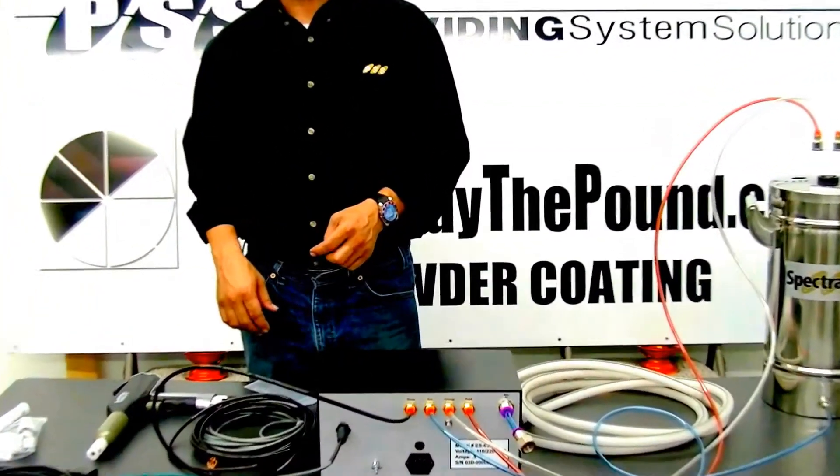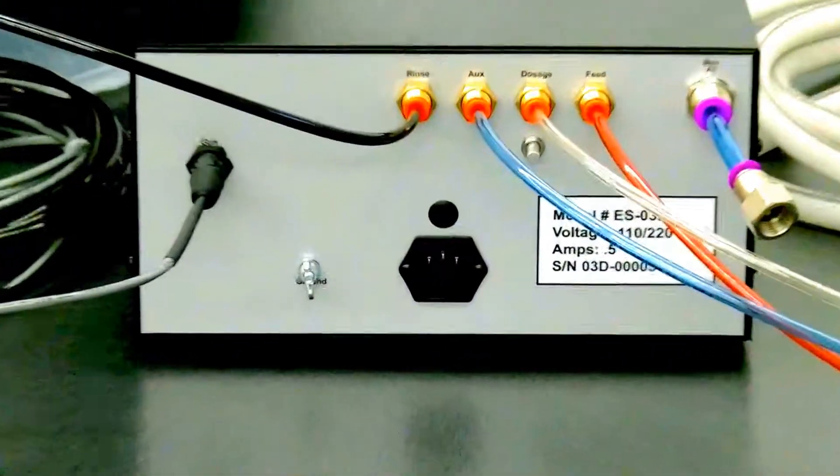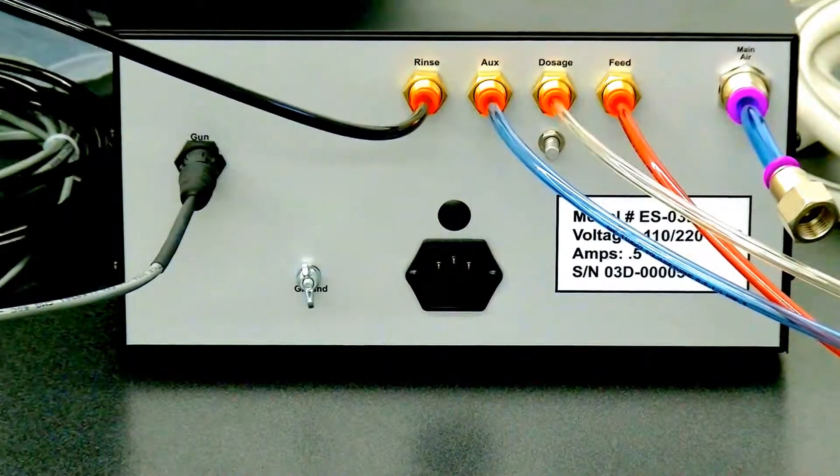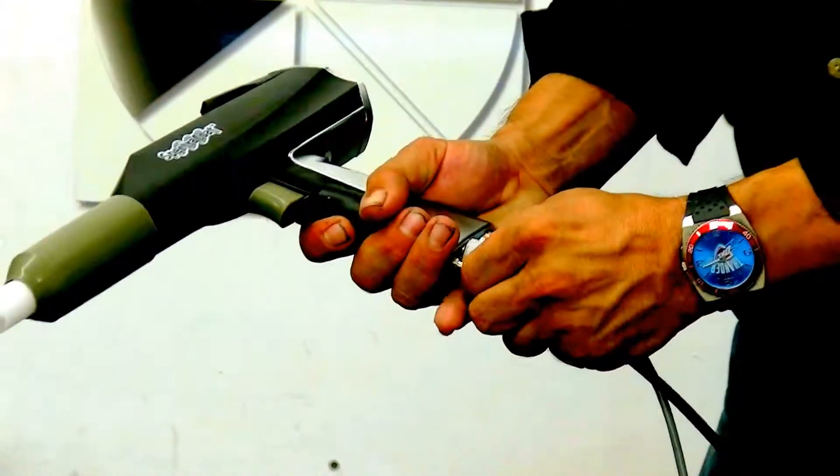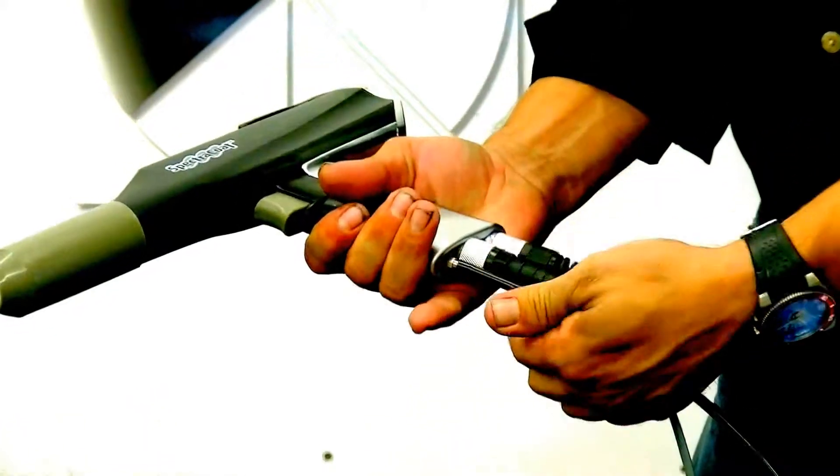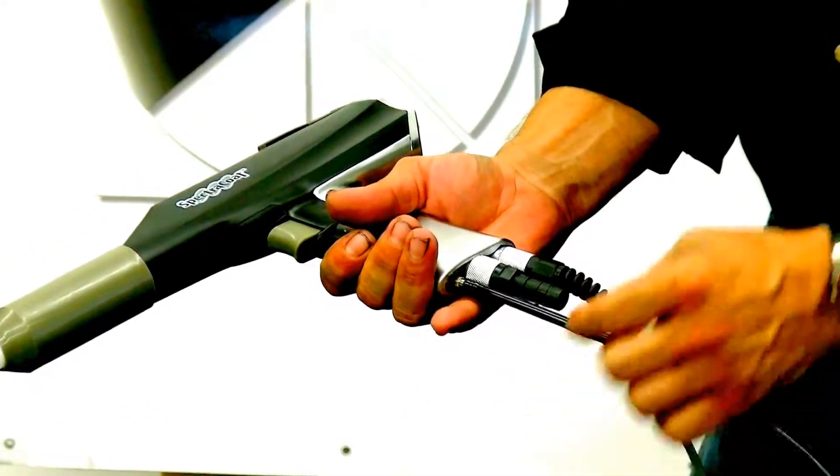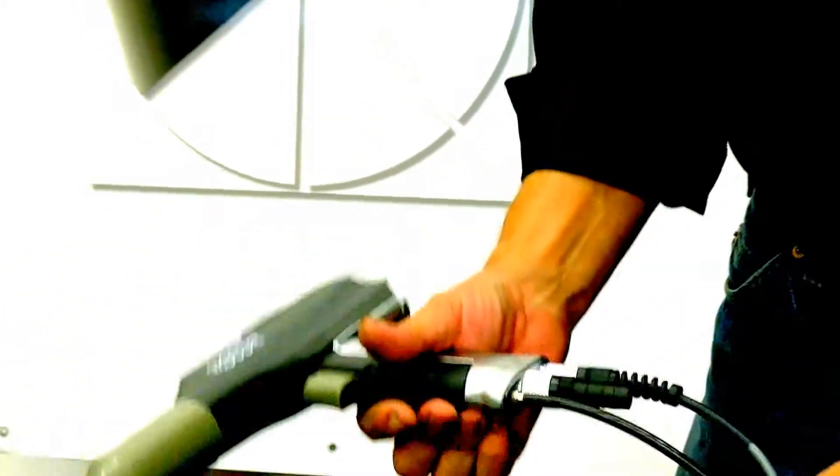And we're going to take that and move that right over here. And we're going to put it on the little small barb of our gun. Just like that. Now you can see we have one connection left here on our gun. And we see no more air connections here on the back.